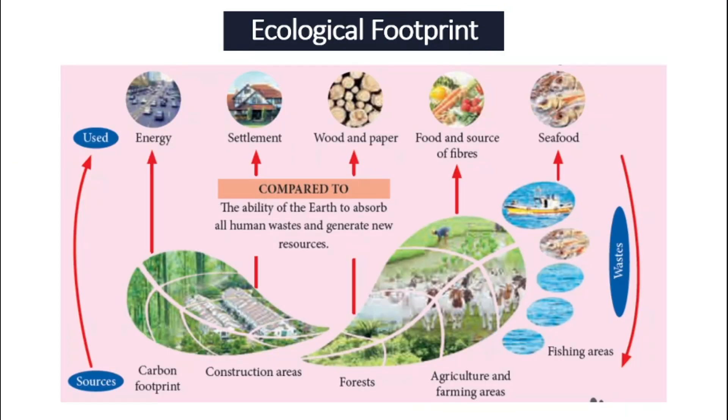The ecological footprint is measured or is divided into six different categories. Number one, carbon; second, construction areas; third, forest; fourth, agriculture; number five, farming areas; and number six, fishing areas. And all of this is used to provide for our needs like energy, settlement, wood, paper, food, source of fibers, and seafood.